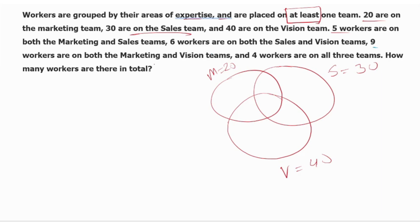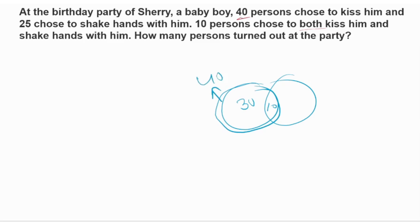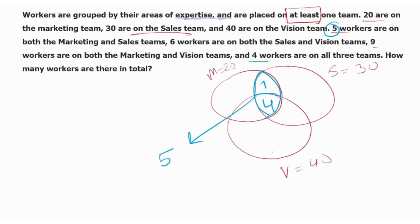Nine workers are both on the marketing and third team, so marketing intersection third team equals 9. Four workers are on all three teams, so A∩B∩C = 4. Similarly: 6, 5, 10, 13, 14, 15.